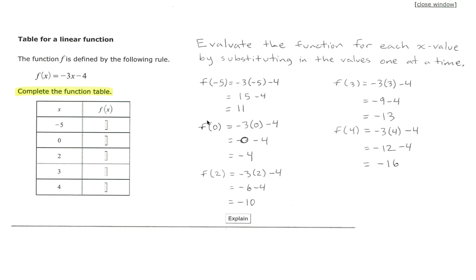Let's plug in our 0 now. We substitute 0. f of 0 equals negative 3 times 0 minus 4. Negative 3 times 0 is 0. 0 minus 4 is negative 4.